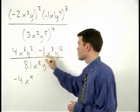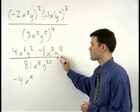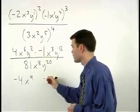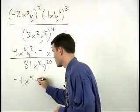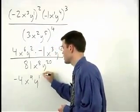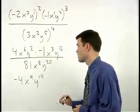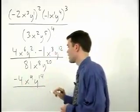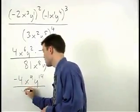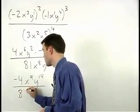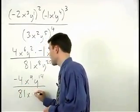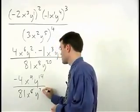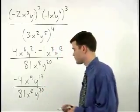Y squared times y to the 12th is y to the 2 plus 12, or y to the 14th. So we have negative 4 x to the ninth y to the 14th over 81 x to the eighth y to the 20th.